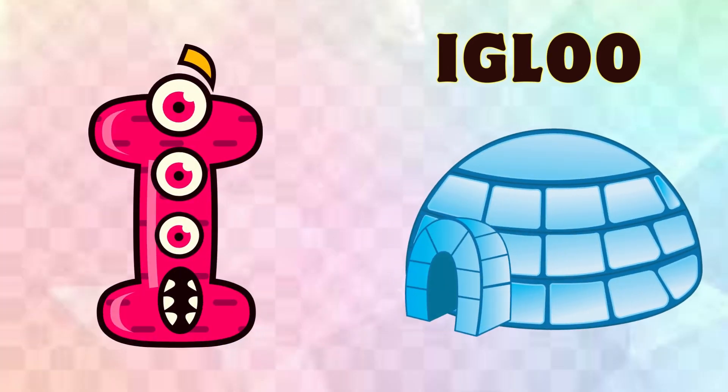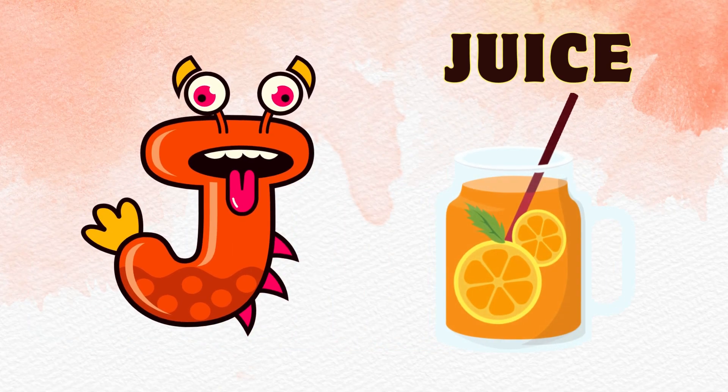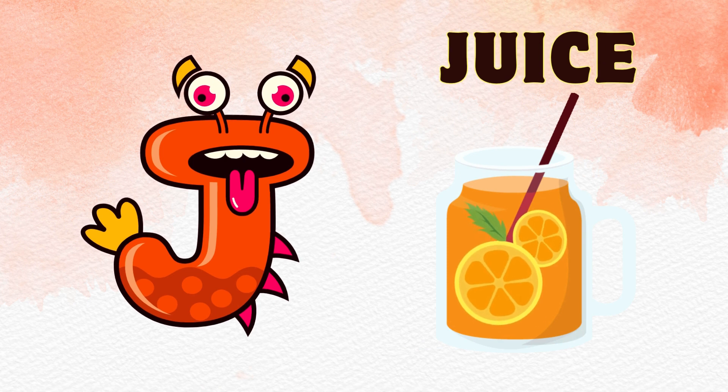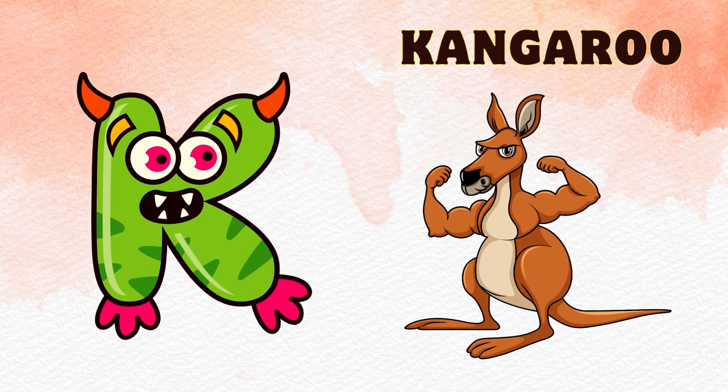I-I-Igloo. J is for Juice, J-J-J-Juice. K is for Kangaroo, K-K-Kangaroo.